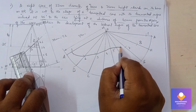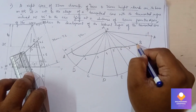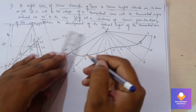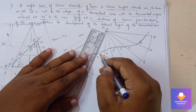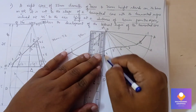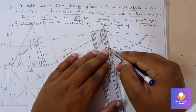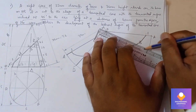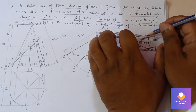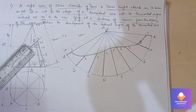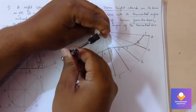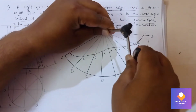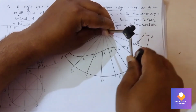Darken the retained truncated portion. Take the compass and darken the lower arc portion. That completes the problem.